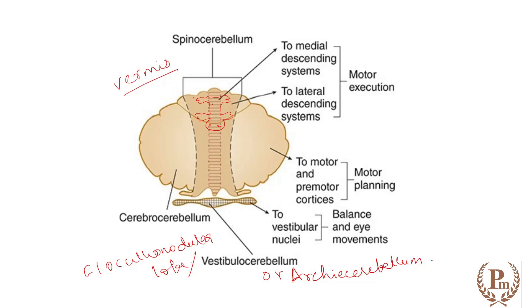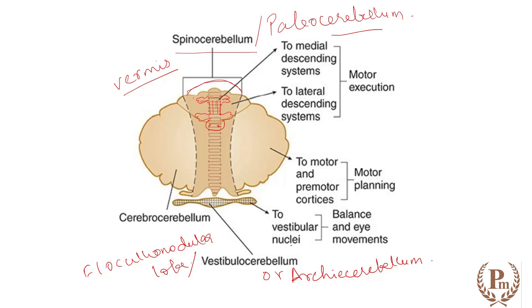Since connections from the spinal cord are needed to maintain body posture and body balance, there is a connection from the cerebellum to the spinal cord. The axial part of the body as well as the limbs are represented in the vermis and paravermis area. Because of this connection with the spinal cord, we also call this area the spinocerebellum.